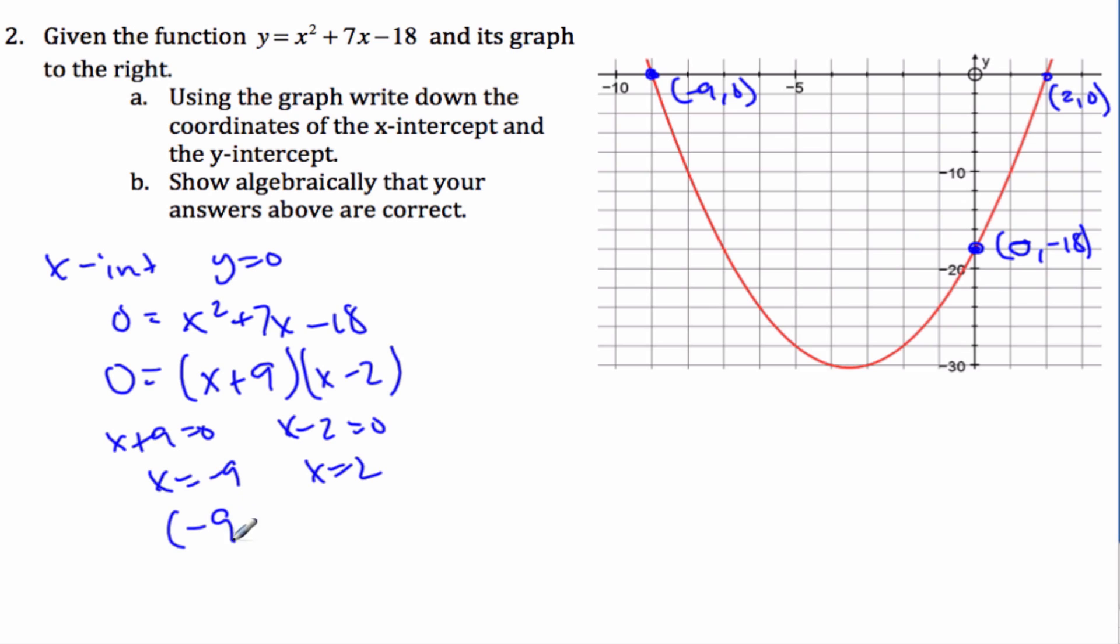And so the (-9, 0) is my one intercept. And (2, 0) is my other intercept. Because my y is 0, and my x are these values here. And that makes perfect sense for up here.